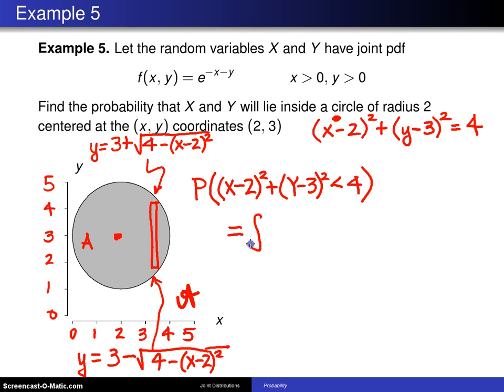That will be the double integral over the joint density function e to minus x minus y. Since we've run our strips up and down in this case this will be dy dx and the y value here will go from the lower curve which is 3 minus the square root of 4 minus x minus 2 squared.